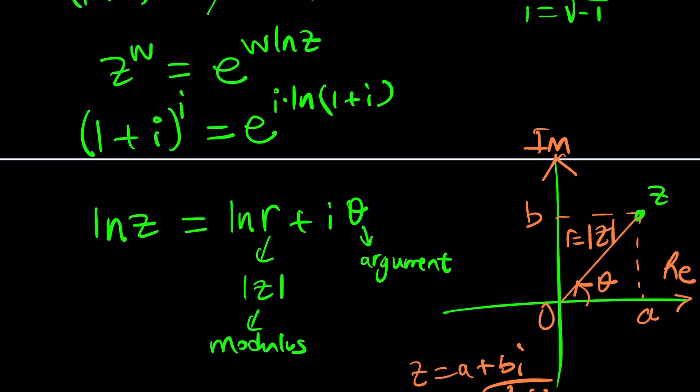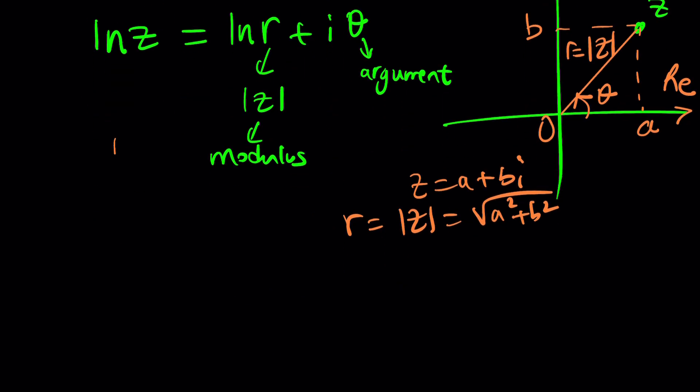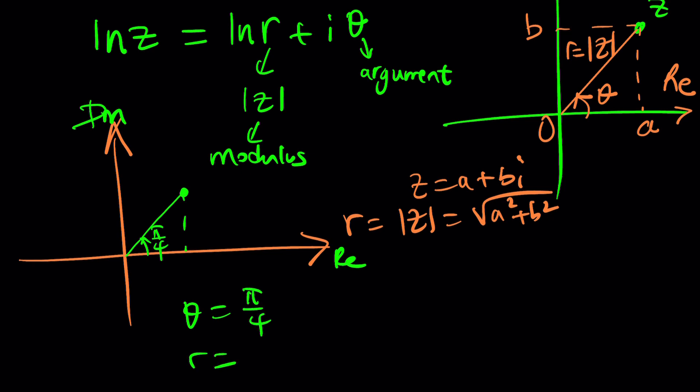In this case, it's easy because it's 1 plus i. So if you just think about how 1 plus i would be plotted, easy right here. And guess what? That's going to make an isosceles right triangle, which means this angle is pi over 4 radians. Beautiful.